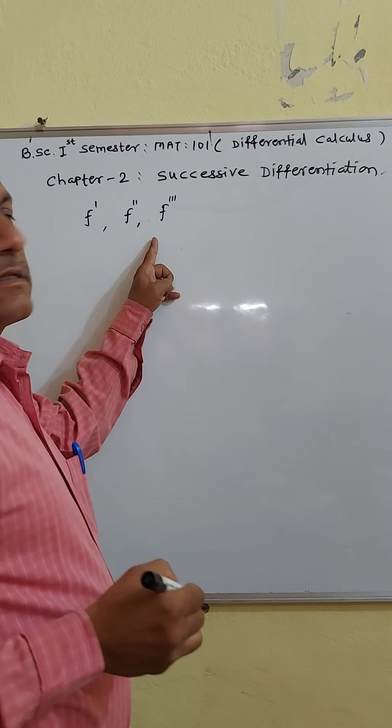So these are the 1st derivative, 2nd derivative, 3rd derivative, and nth derivative of y, where y is equal to f of x. yn at a means the value of the nth derivative at x equals a, or f raised to n at a. So this denotes the value of the nth derivative at point a.